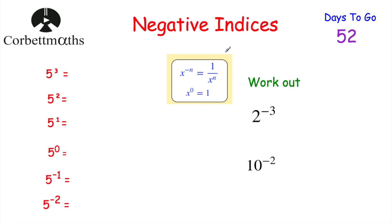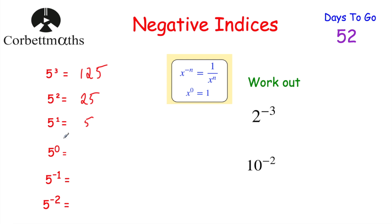So in negative indices — this is part of the revision card — I want to look at this pattern to begin with. We've got 5 cubed, that means 5 multiplied by 5 multiplied by 5, and 5 times 5 is 25, times 5 again is 125. 5 squared is 25, and 5 to the power of 1 is just 5. As you can see, each time we decrease the power by 1 — so next is 5 to the power of 0, then 5 to the power of negative 1, 5 to the power of negative 2, and so on.